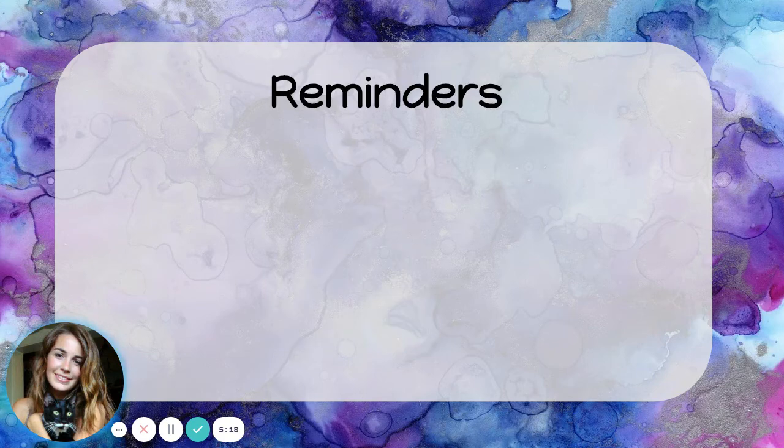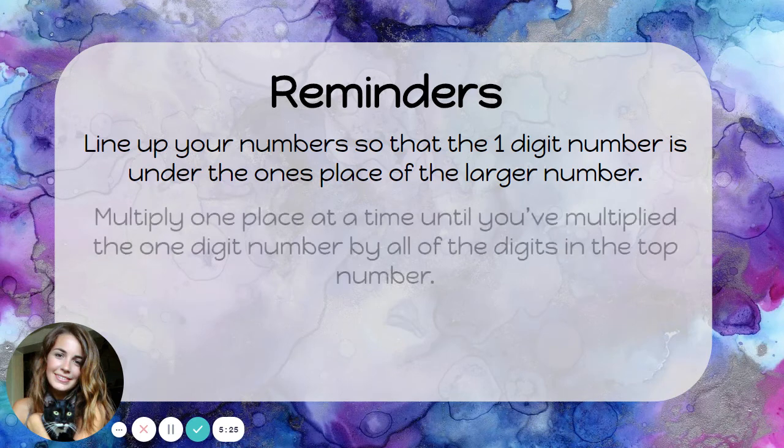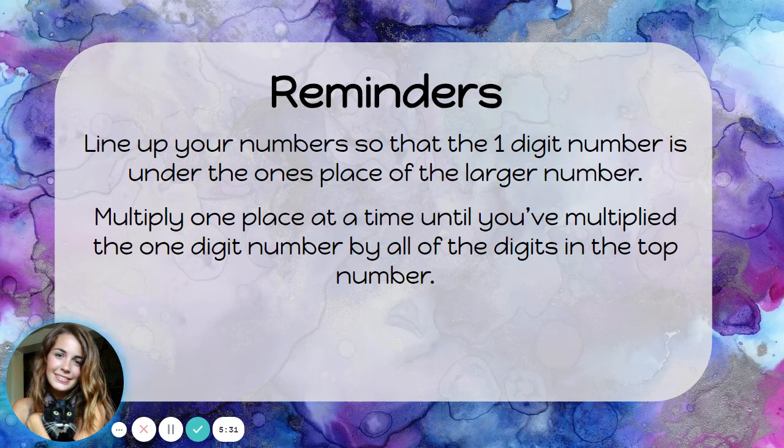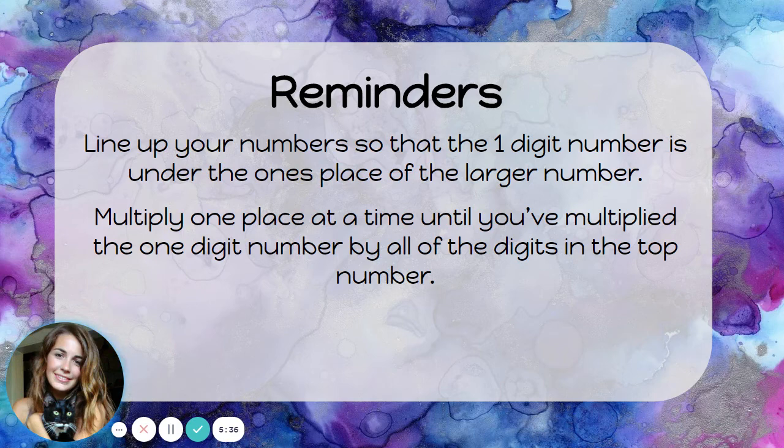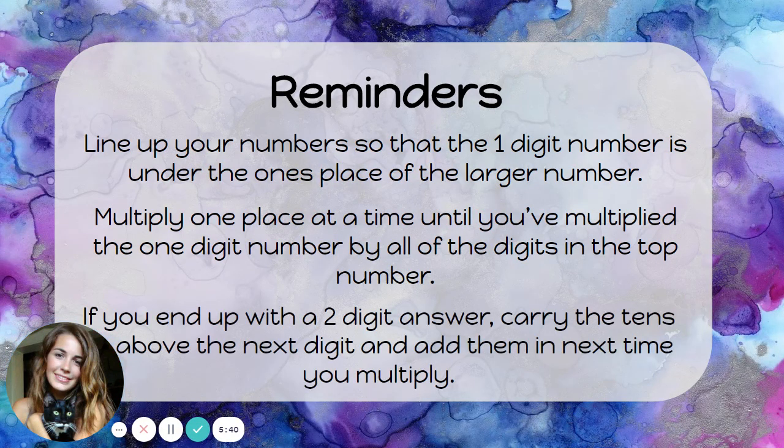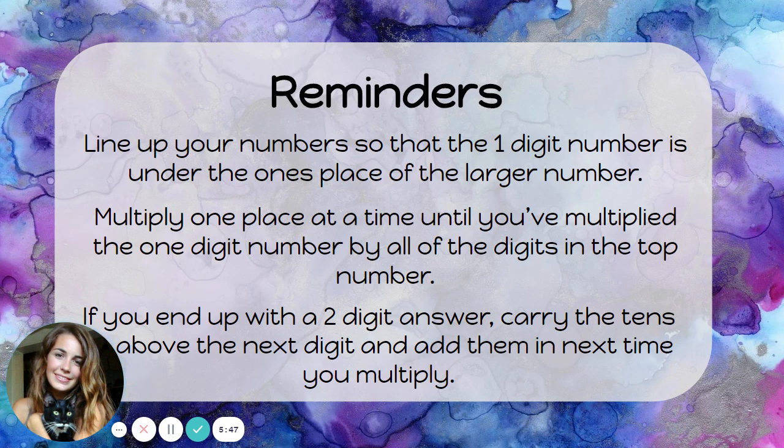Here are some reminders. Line up your numbers so that the one digit number is under the ones place of the larger number. Multiply one place at a time until you've multiplied the one digit number by all of the digits in the top number. So, times the ones and then times the tens. And then if you have hundreds, multiply it by the hundreds. If you end up with a two digit answer when you multiply, carry the tens above the next digit and add them in next time you multiply.